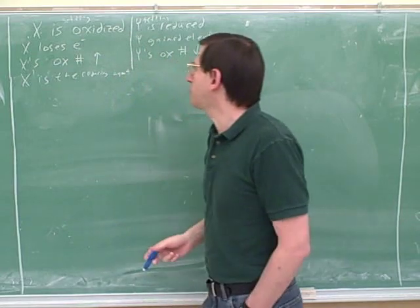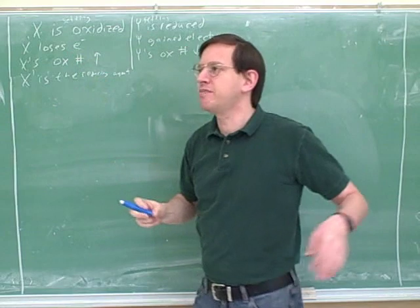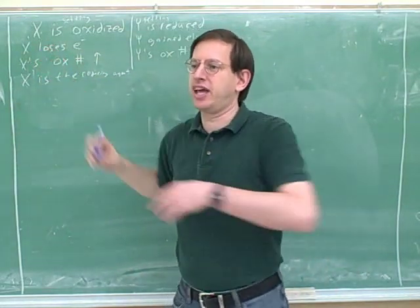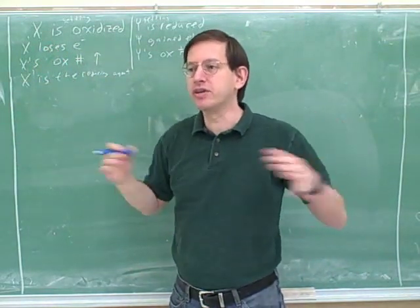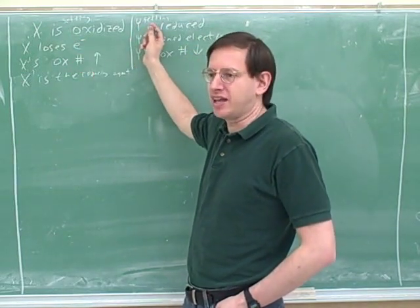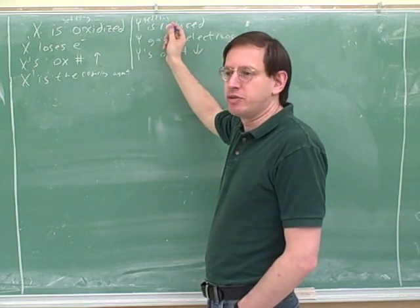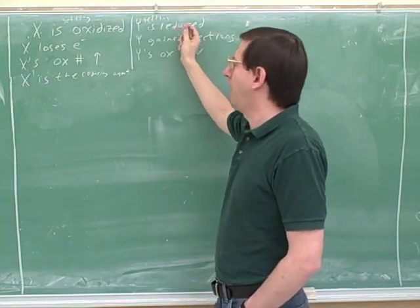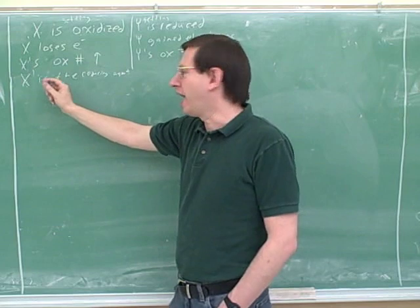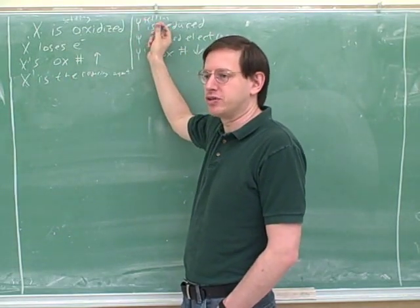So it's the reducing agent. We can think that this is a reaction between x and y. Of course, if x is losing electrons, somebody must be gaining the electrons. The electrons can't just disappear into the ether. They have to go someplace. If x is losing the electrons, we must be assuming that y is gaining the electrons over here. That is, y is becoming reduced. Well, who is reducing y? X.